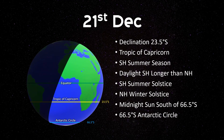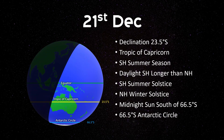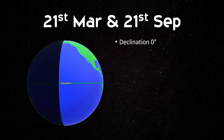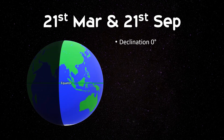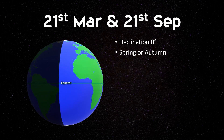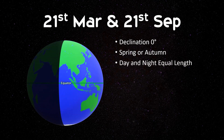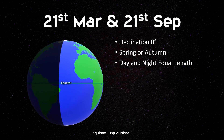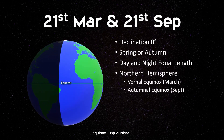66.5 degrees south latitude is known as the Antarctic Circle. On the 21st of March and 21st of September, the declination is zero degrees, which means the center of the sun is directly overhead the equator. On the 21st of March, the northern hemisphere experiences spring season and the southern hemisphere experiences autumn season. The situation is reversed on the 21st of September. During this period, the length of day and night are equal. This is where the term equinox comes from — equinox in English means equal night. In the northern hemisphere, this period is known as the vernal equinox in March and the autumnal equinox in September.